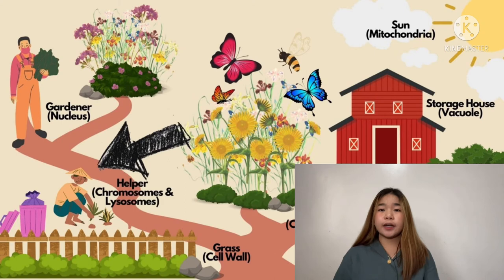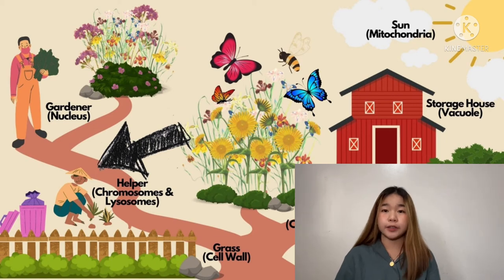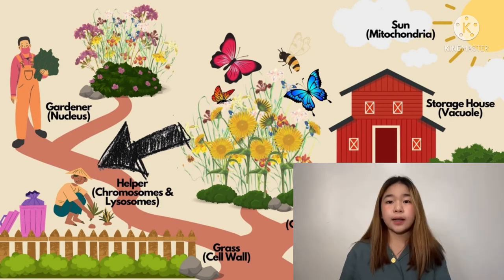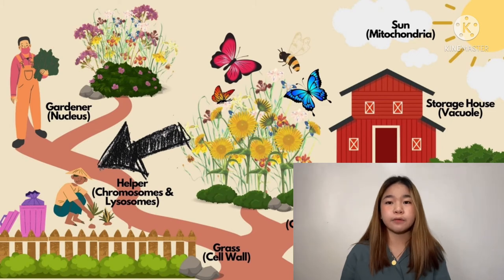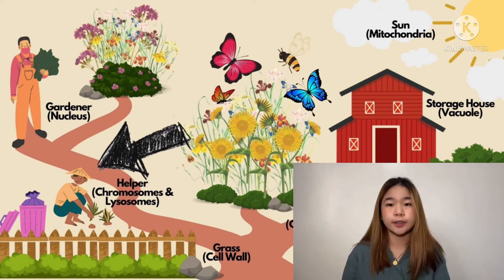The helper in the garden functions as both a lysosome and a chromosome. The helper helps the gardener in planning and organizing the production of flowers. Just like chromosomes, it helps in the overall function of the cell. Lysosomes destroy bacteria in a cell and help in the degrading and recycling of cellular waste. The helper likewise recycles all the waste from the garden and disposes of unnecessary things.